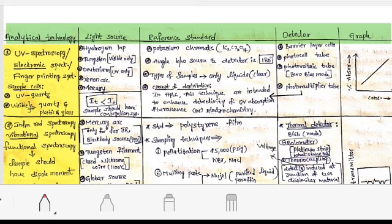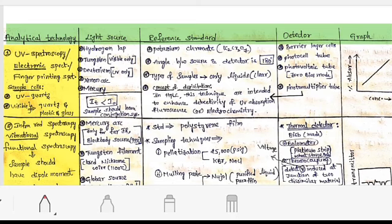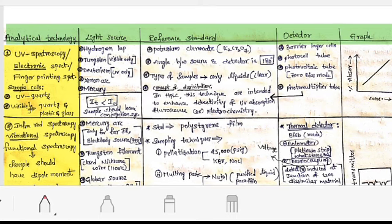Reference standard in UV spectroscopy is potassium chromate K2Cr2O7. The angle between the source and detector is 180 degrees, meaning you have to keep the detector and source in a straight line. The type of samples used should be only liquid and that liquid should be clear.